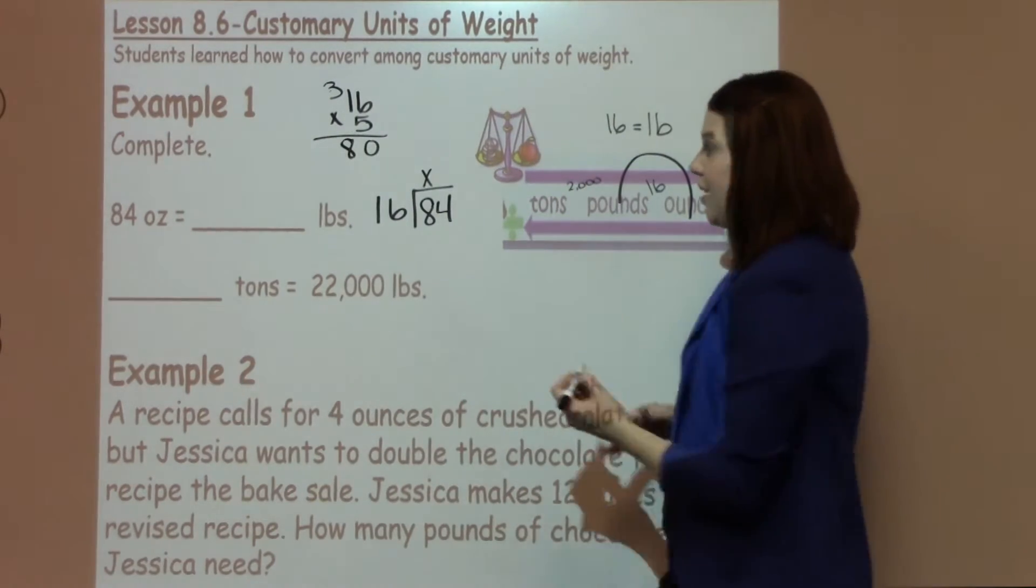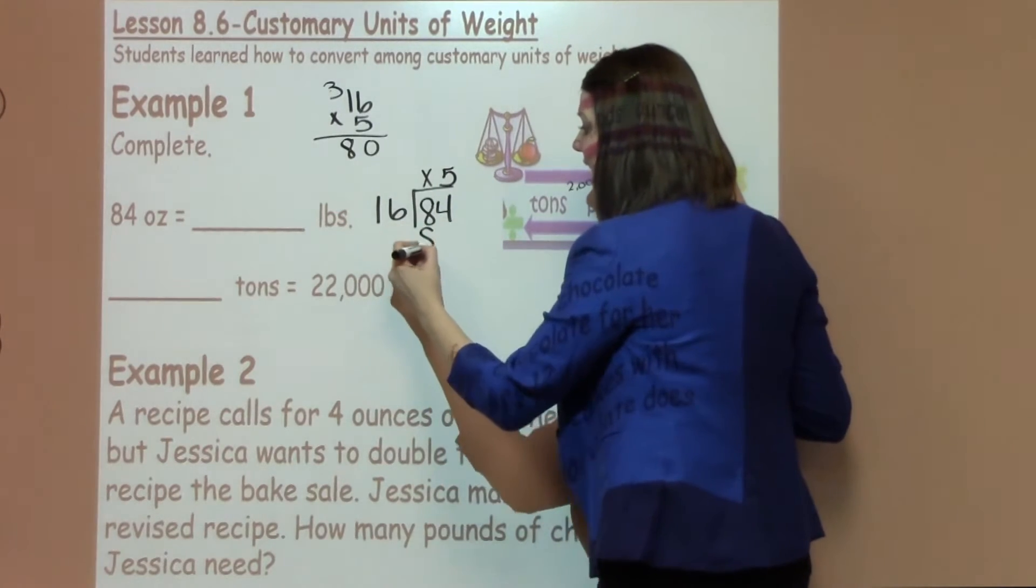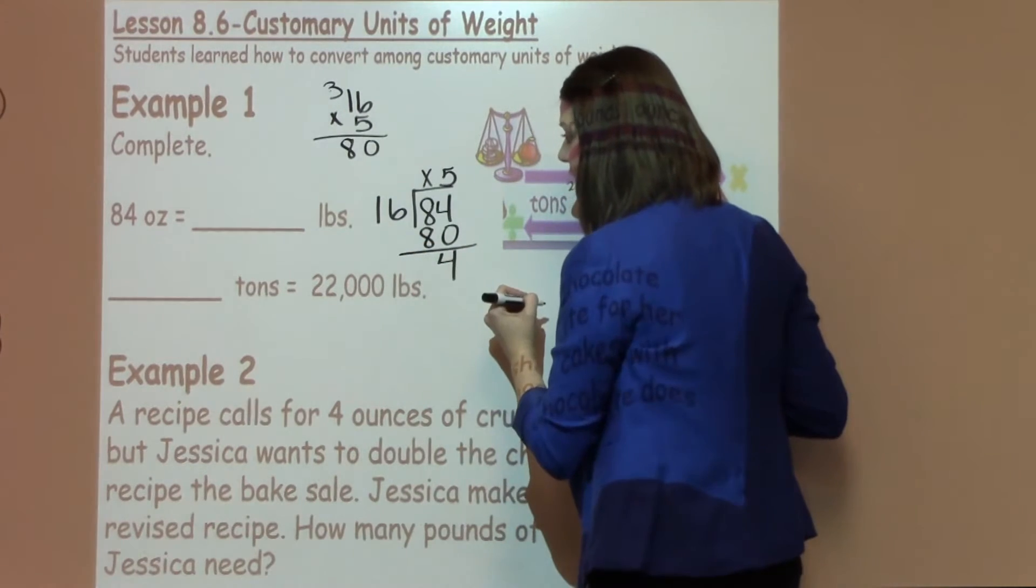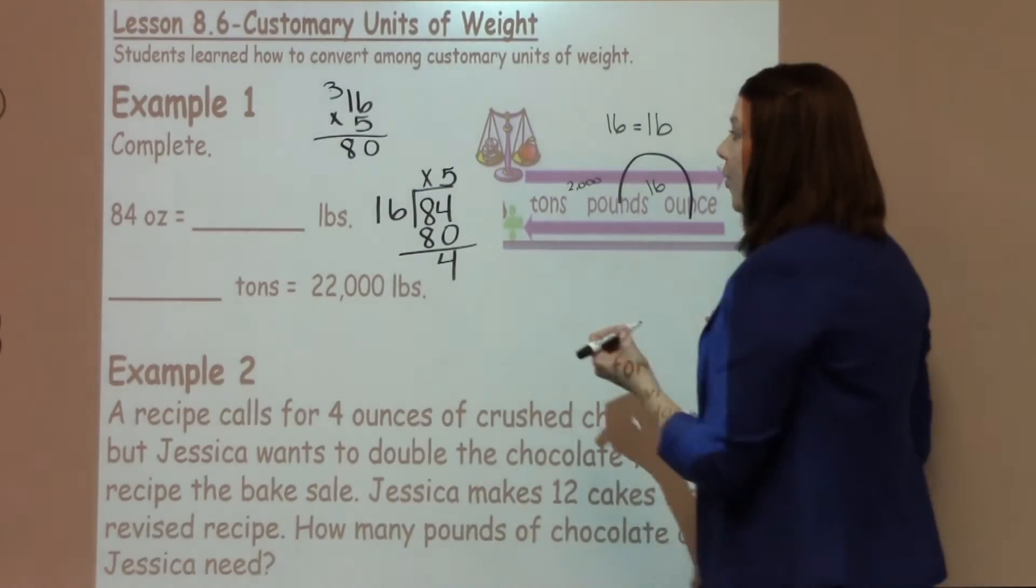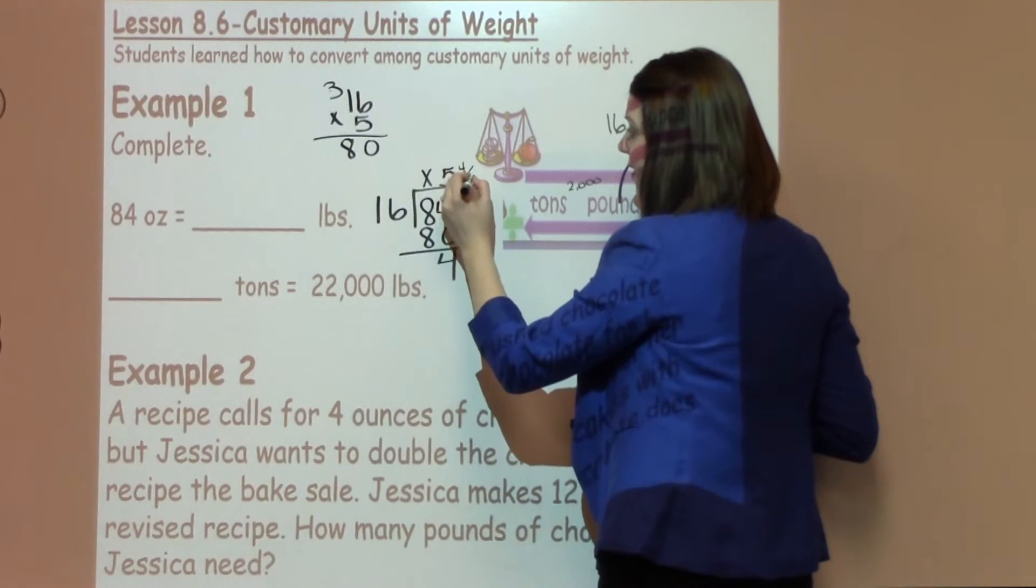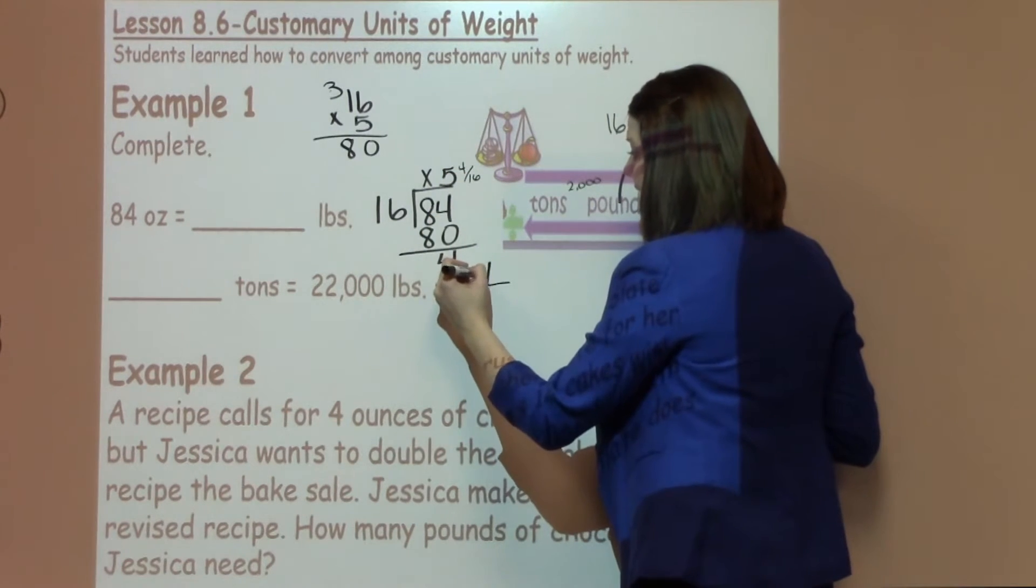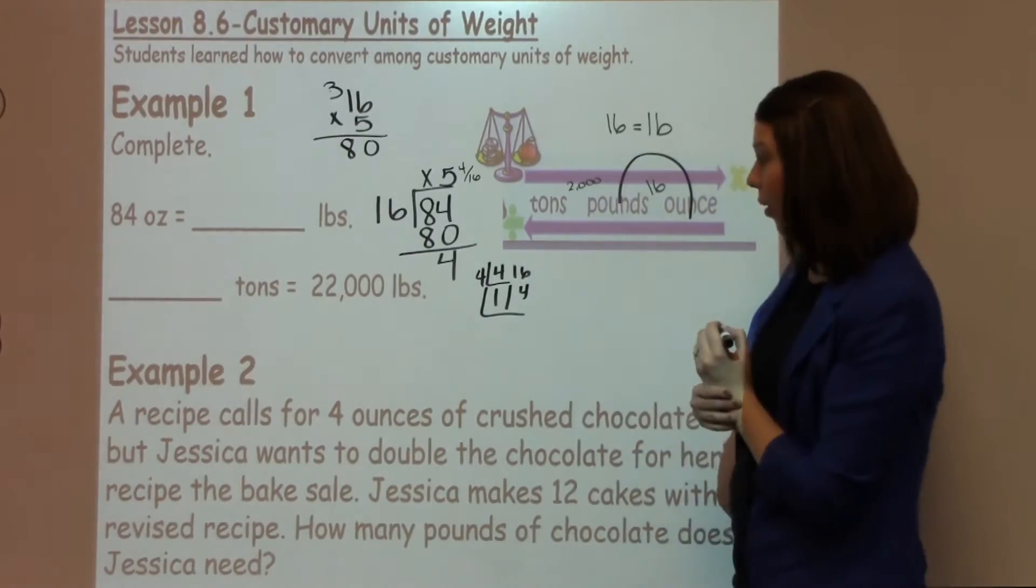So what I'm going to go ahead and do is I'm going to write my 5 down. 5 times 16 is 80, and I've got 4 left over. Now there's a couple of things we need to do with this number. We could write it as a fraction. We could write 5 and 4 sixteenths pounds, which we would reduce. 4 and 16 are divisible by 4, so it would be 1 fourth.